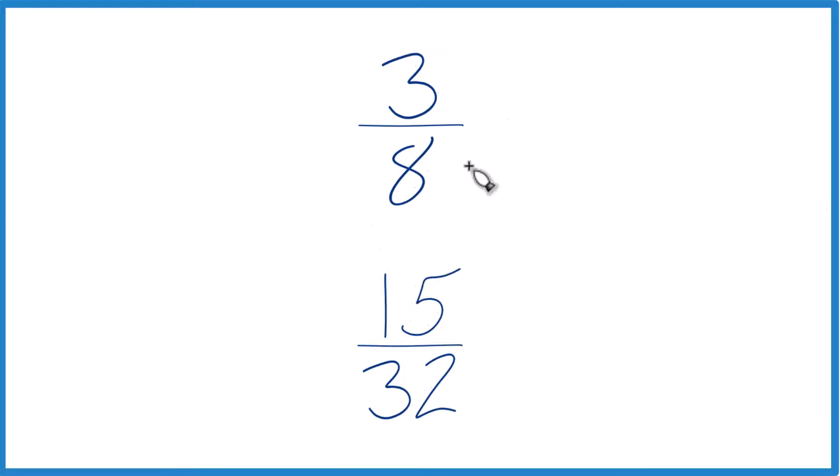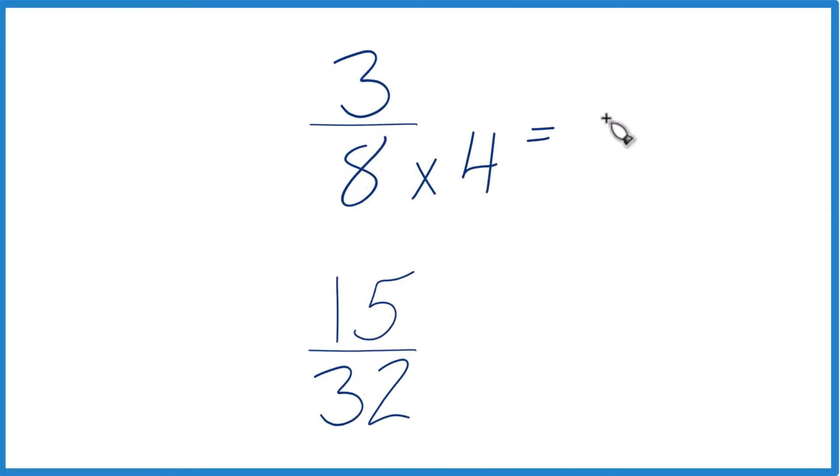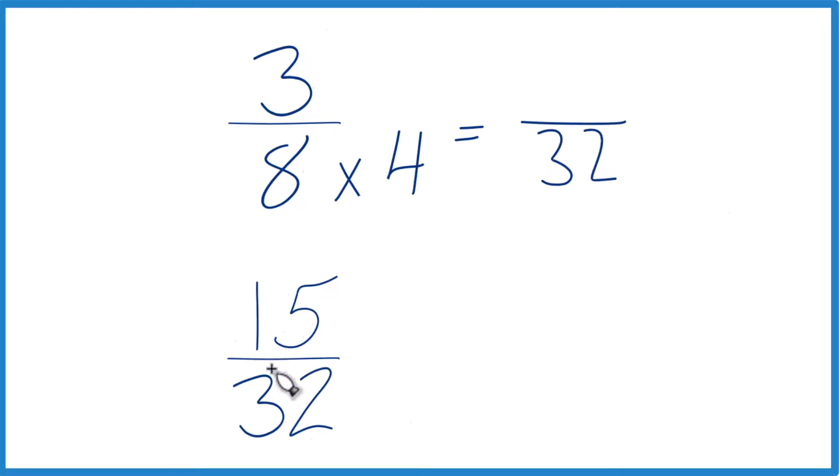8 goes into 32 four times. Let's just multiply 8 times 4 and that equals 32. So we have 32 down here already, so we'll just keep it the same, 15 32nds.